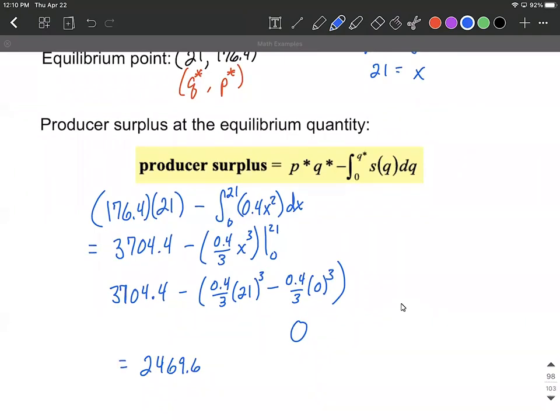All right, so hopefully this helps out on figuring out producer surplus. Just remember, you gotta find the equilibrium point first. That's just when you set the demand and the supply functions equal to one another. Solve down, that'll give you a quantity, and then plug that back into one of those functions to get your price point. All right, hope this helps. Good luck as you're figuring out producer surplus.